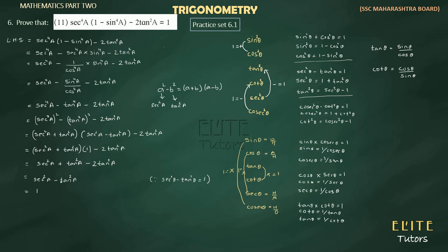So students, we arrived at 1, which proves the identity. The signs work out correctly and question number 11 is complete. Now let's look at question number 12 in the next video. Thank you.